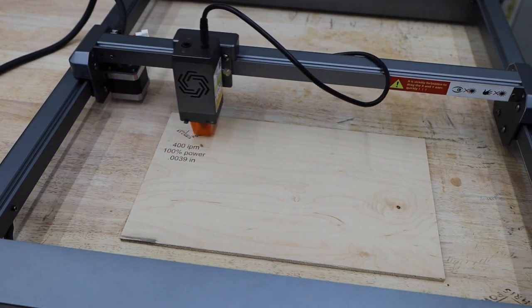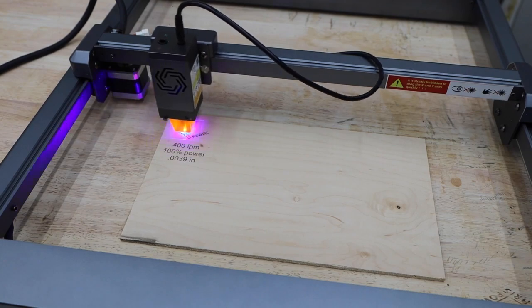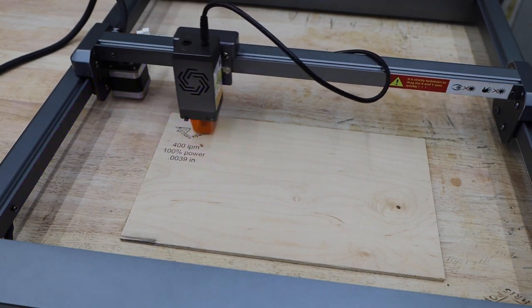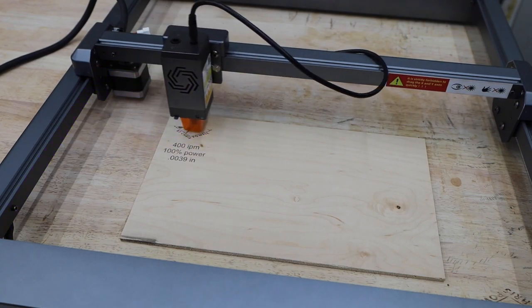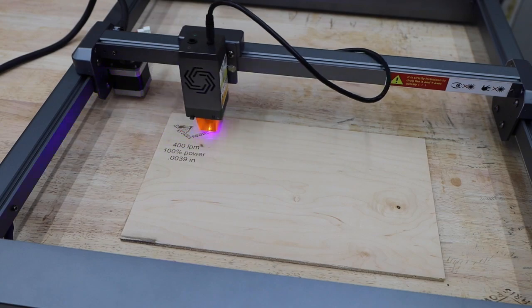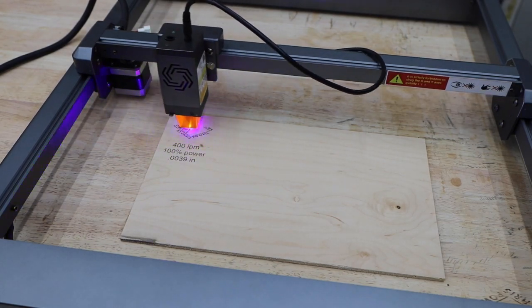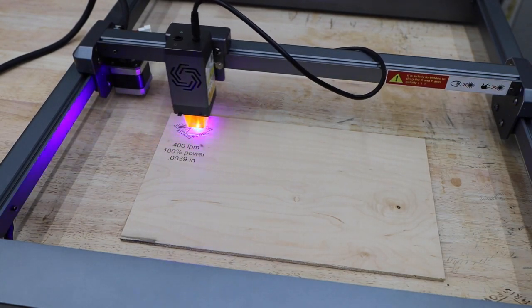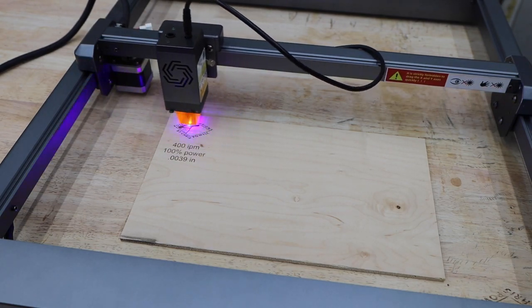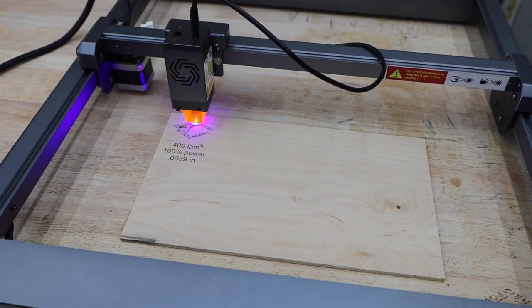One thing you're going to want to do if you get one of these machines is just practice. I see a lot of people who think they're going to just jump in and create amazing stuff. While these machines are definitely capable of it, it takes practice to learn the effects of changing different settings. There's little test cards that people have made that will make a series of squares at different settings. But I like to use bigger images so I can get a better idea of what stuff really looks like.